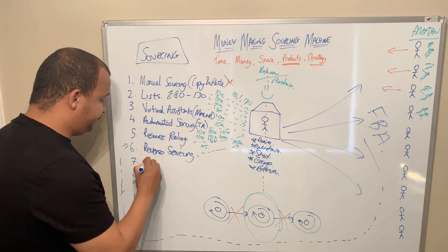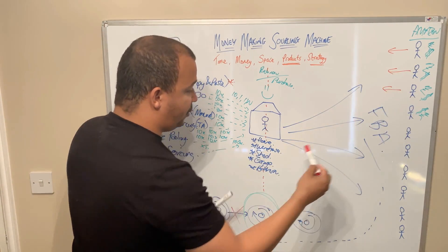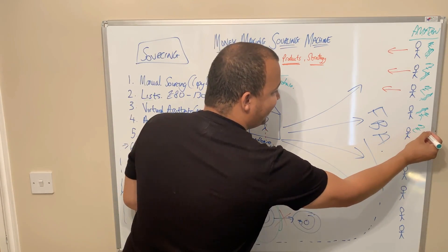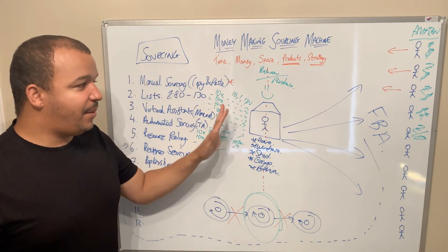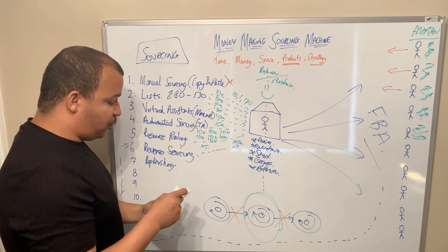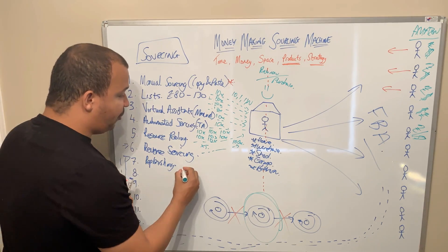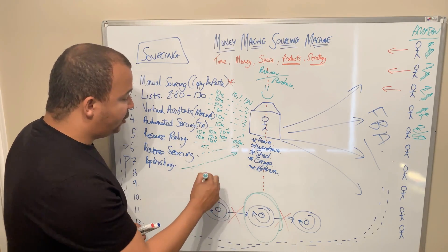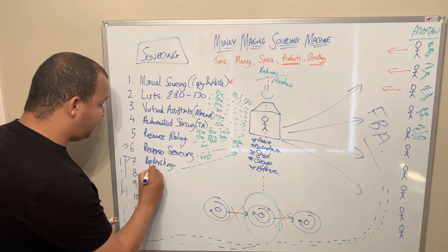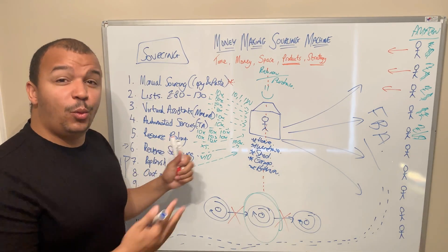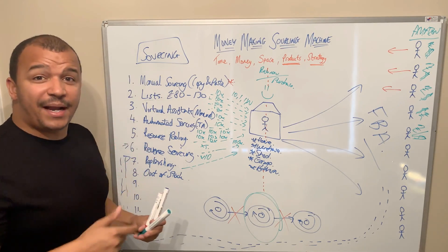The next thing is replenishing. Replenishing is when you're selling product and making money, and you want to replenish those winners. Whether you're doing weekly or daily replenishing, that's another stream — maybe another 10 products coming back to you. Then there's out-of-stock management. Out-of-stock products are winners you can't buy right now. You need a system so that as soon as they're back in stock, you go straight away. We're sourcing like ninjas.